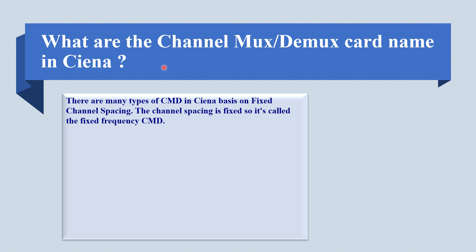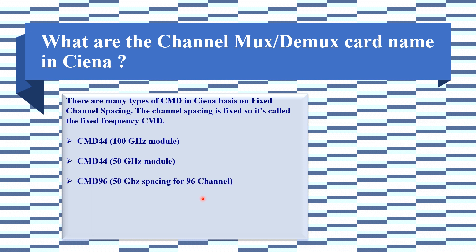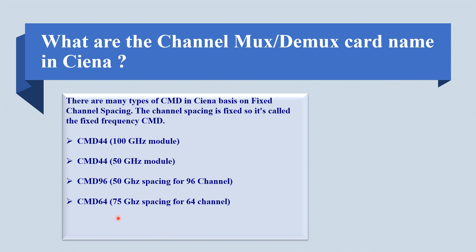Based on fixed channel spacing, it is called fixed frequency CMD. CMD 44 100 GHz module uses 44 channels with 100 GHz channel spacing. CMD 44 50 GHz module uses 44 channels with 50 GHz channel spacing. CMD 96 uses 96 channels with 50 GHz channel spacing. CMD 64 uses 64 channels with 75 GHz channel spacing.